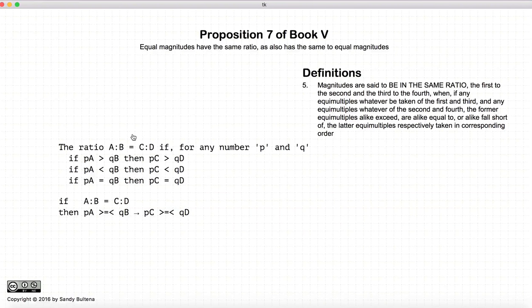if we have four numbers a, b, c, and d, and we have two arbitrary numbers p and q, if for every p and q where p times a is greater than q times b, if that also means that p times c is greater than q times d.